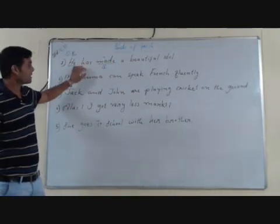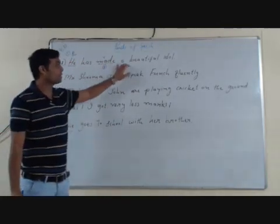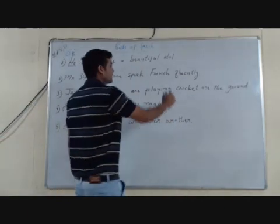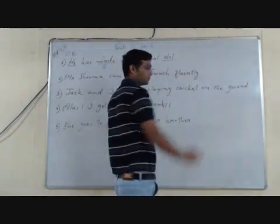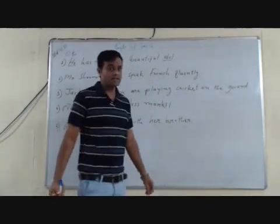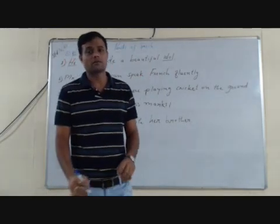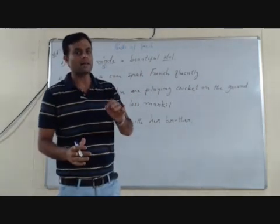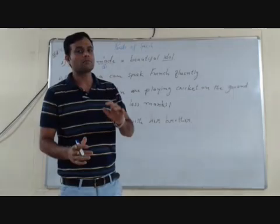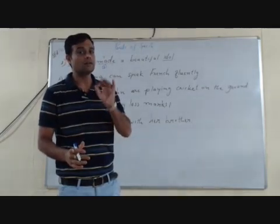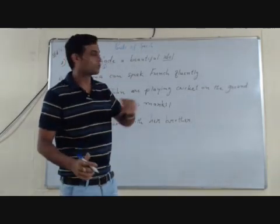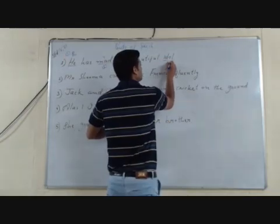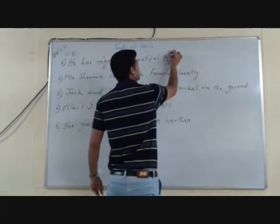Move to the sentence: he has made a beautiful idol. Here we can see that 'idol' — it is a name of a thing. And a name of a thing, place, or person is called a noun. So 'idol' is a noun — that is our third part of speech.